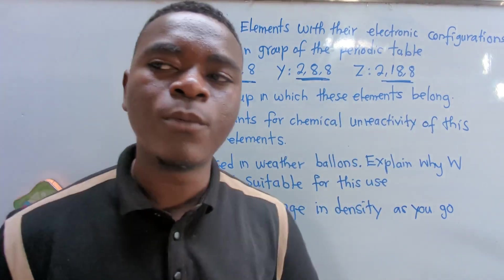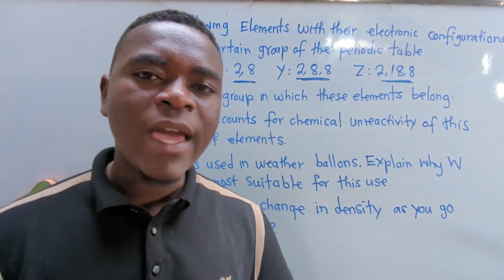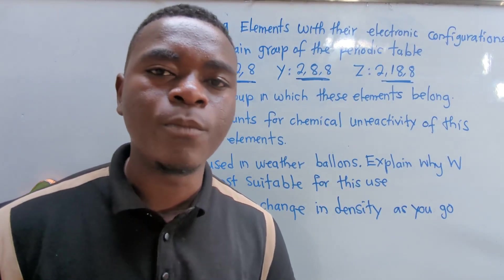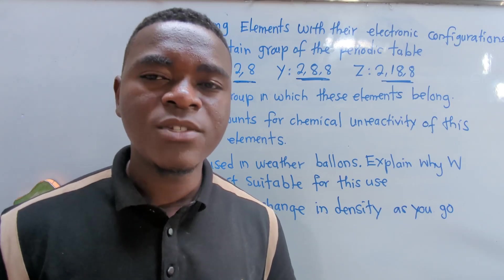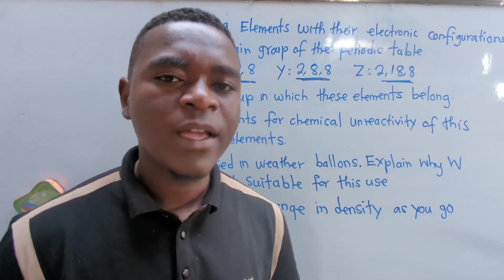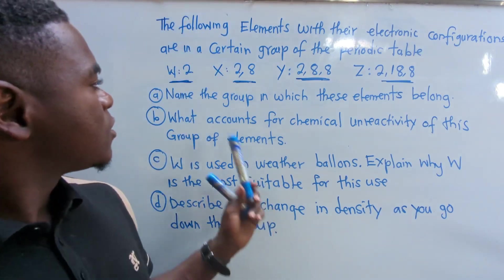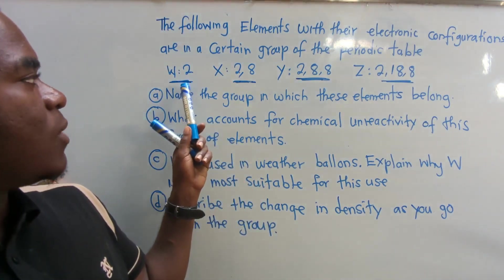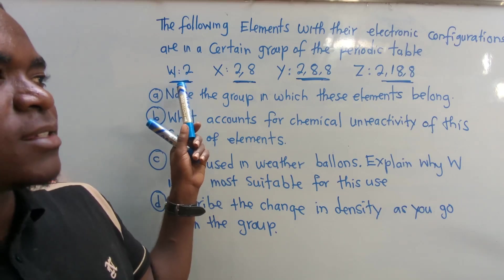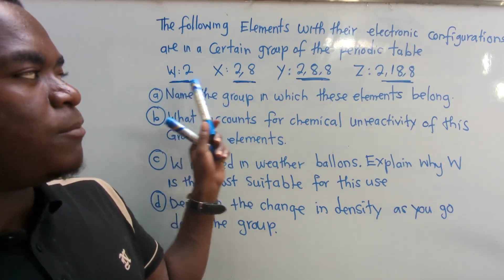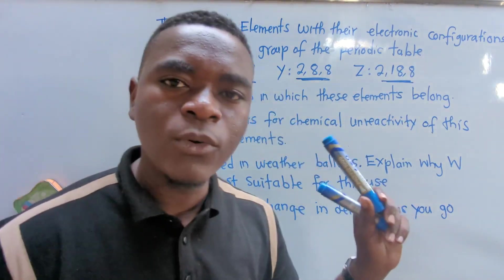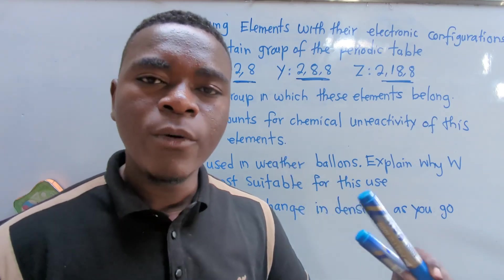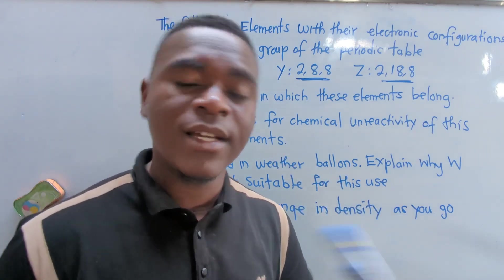So meaning these are from group 8. So group 8 is also known as group 0. It is just one and the same thing. So you need to understand that. Aside knowing that, the way it is like this, this can be idiom because these are from group 8. And those from group 8 are called noble gases or inert gases.